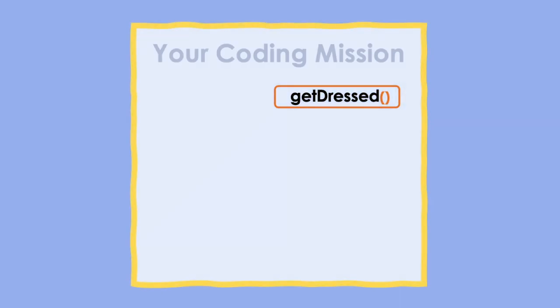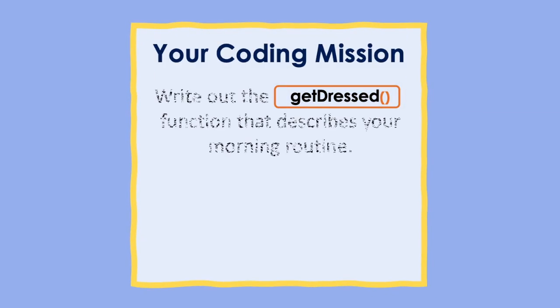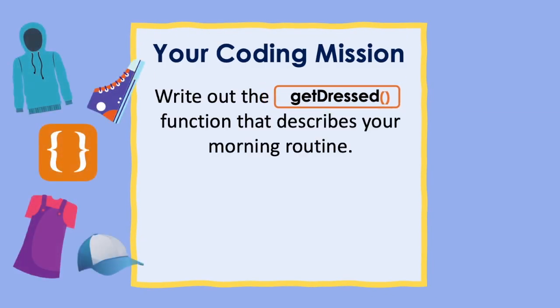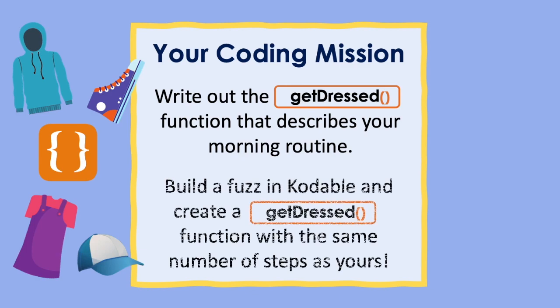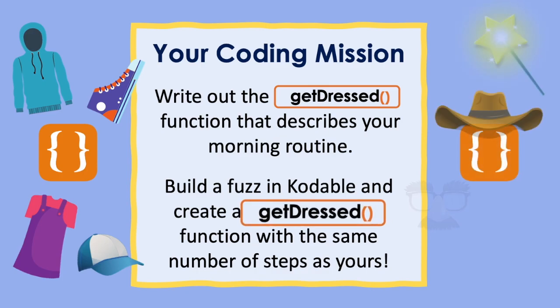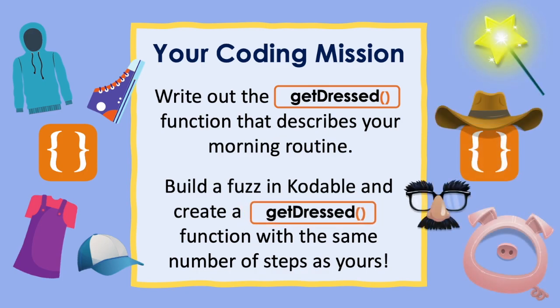Here's your mission: write out the get dressed function that describes your morning routine. Then build a Fuzz in Codable and create a get dressed function with the same number of steps as yours.